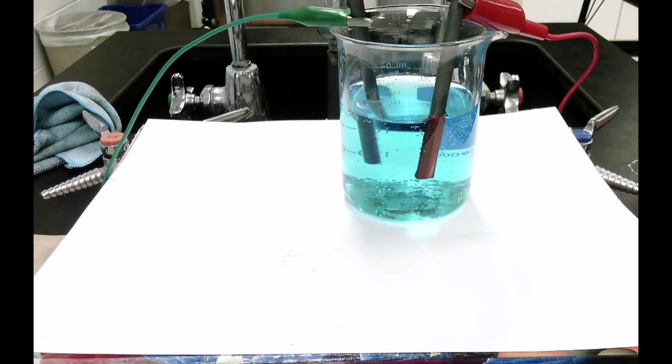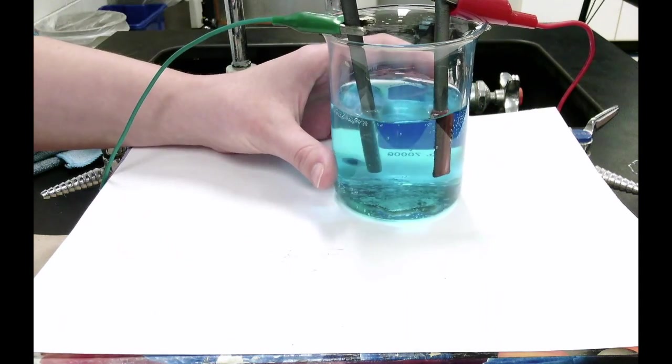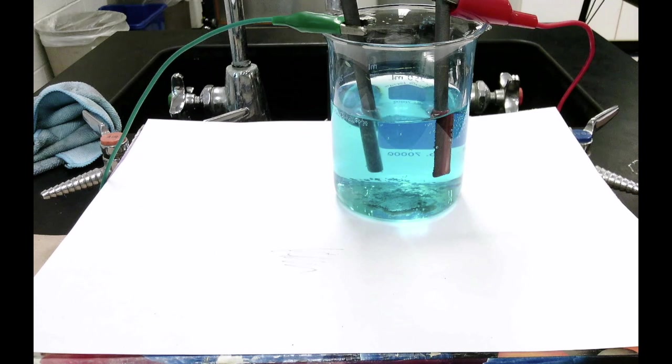Now let's speed up the video a little bit so we can watch this change take place a little bit faster. So we can still see bubbles being produced at the positive electrode and the negative electrode definitely has turned this reddish color. And it looks like it might be getting a little bit thicker as well.